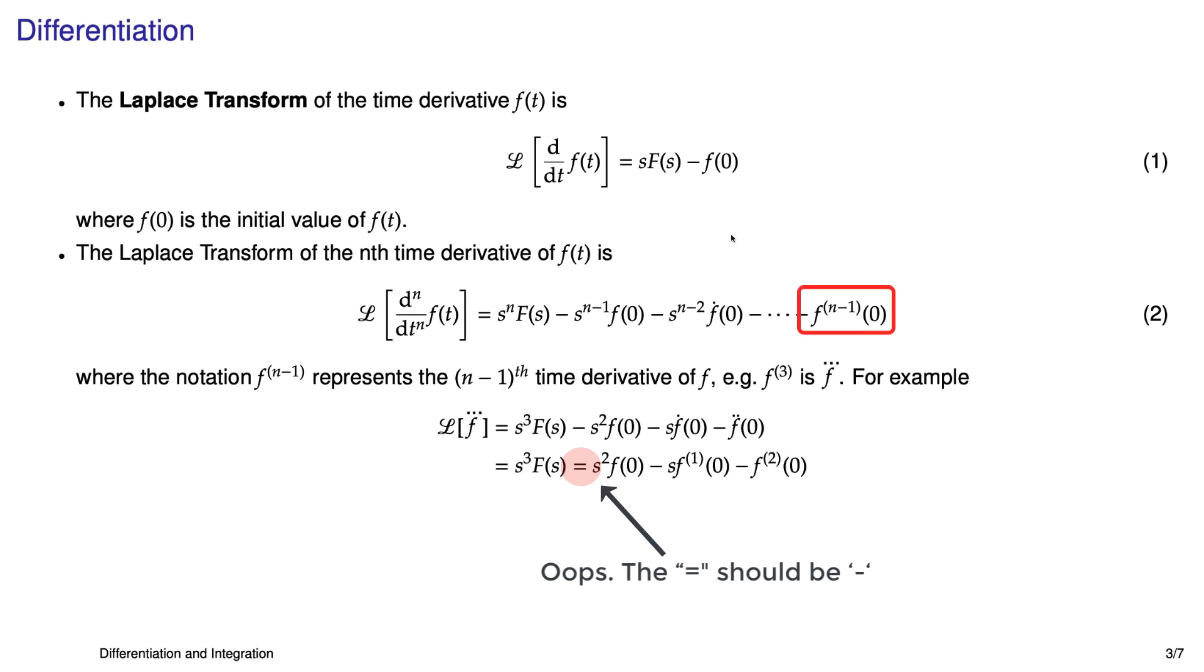The superscript on the f's that are in parentheses represents the number of time derivatives on f. So, for instance, in equation 2, the very last term has f with the superscript in parentheses of n minus 1. That just means that there's n minus 1 derivatives, or dots, on that f. So it's the n minus 1th initial condition on f. This property is probably easiest to see when you just work an example. And here we have the Laplace transform of the third derivative of f. So you just get an s cubed times capital F, minus s squared times f zero, minus s times f dot, minus f double dot. The main takeaway is that differentiation in the time domain is like multiplication by s in the Laplace domain.